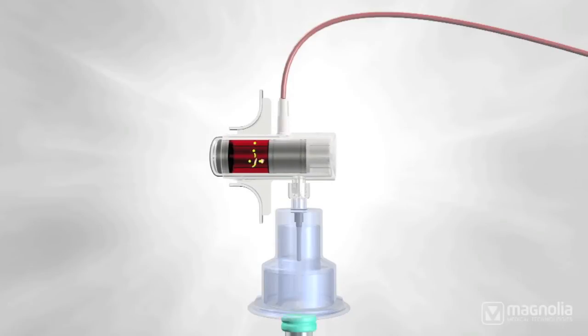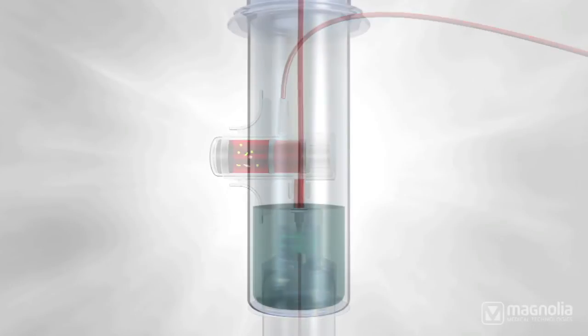Finally, once Steropath has been fully actuated, a second sterile blood flow path is accessed that allows venous blood without skin contaminants to flow into the culture bottles.